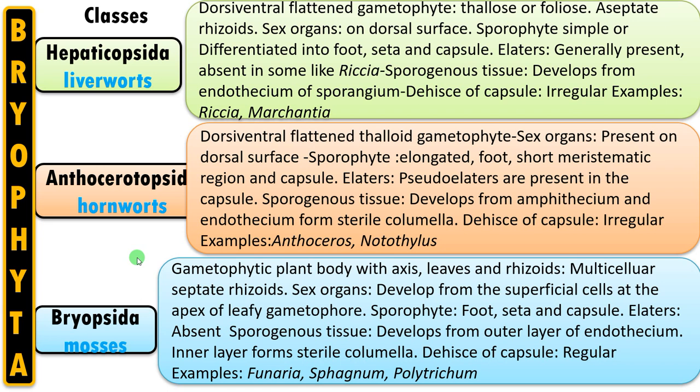So to summarize, the three classes of bryophytes are Hepaticopsida the liverworts, Anthocerotopsida the hornworts, and Bryopsida the mosses — the most advanced group among bryophytes. Remember, bryophytes are the most diverse group of plants after flowering plants or angiosperms, with approximately 15,000 to 25,000 species. Hope you are benefited from this video. Thank you so much for your support. You are with biologyexams4u.com.